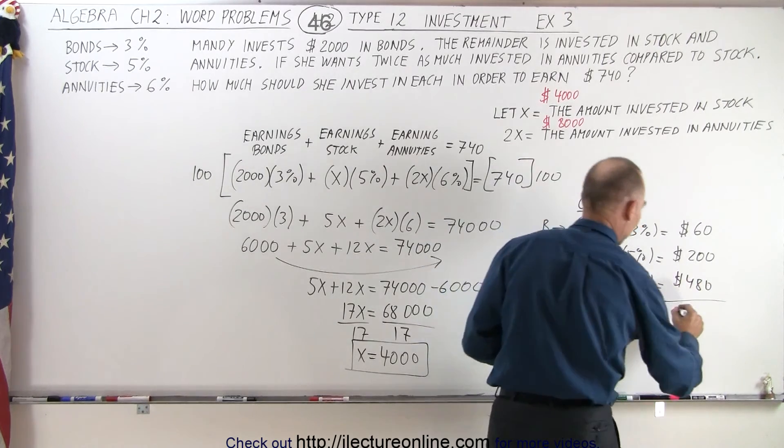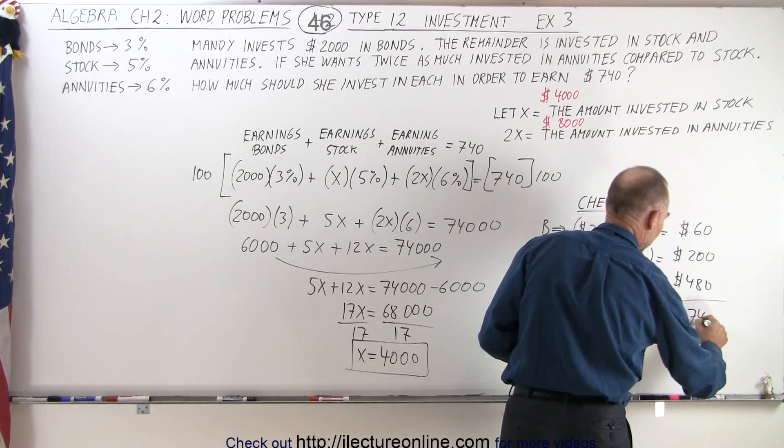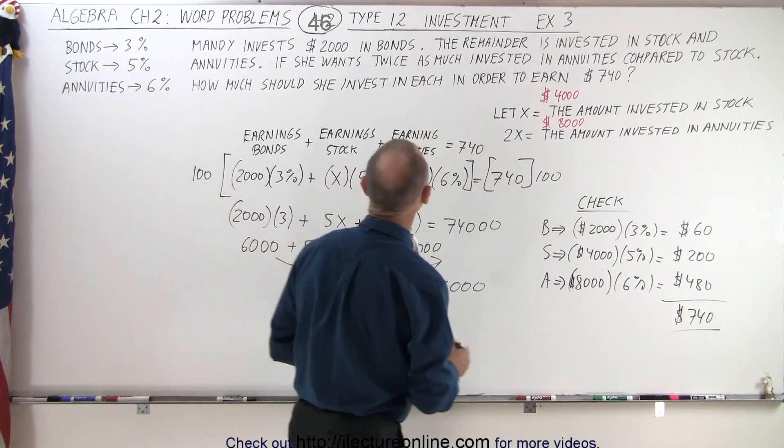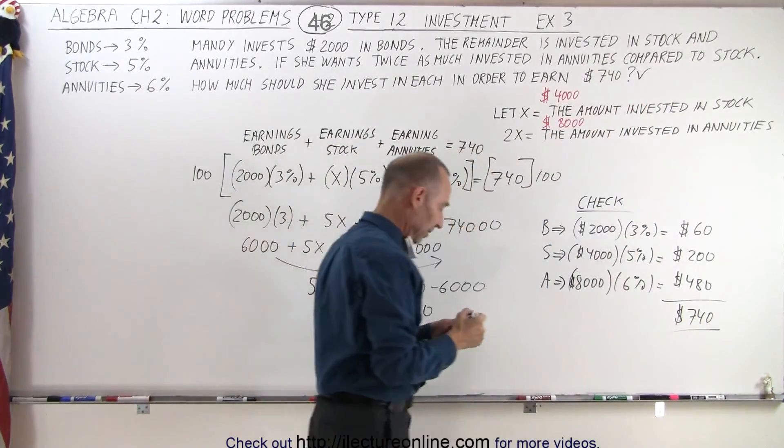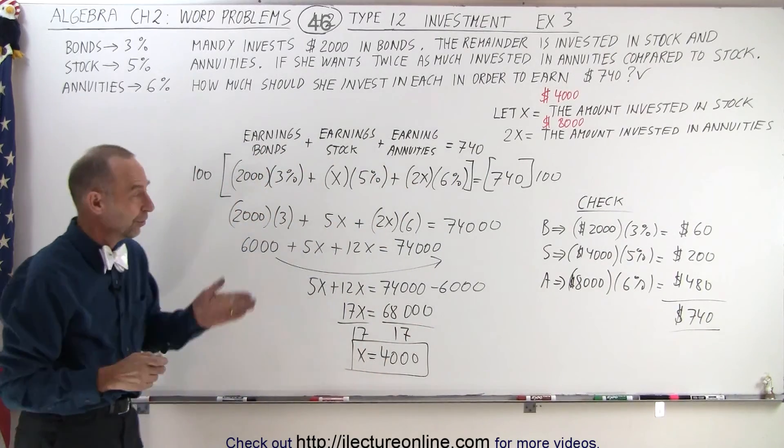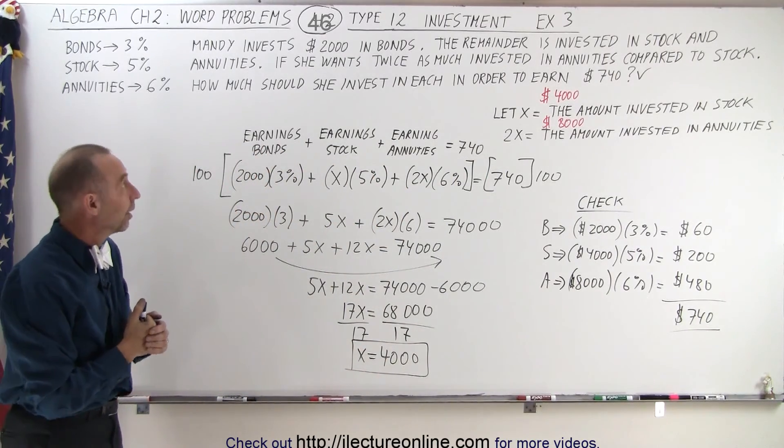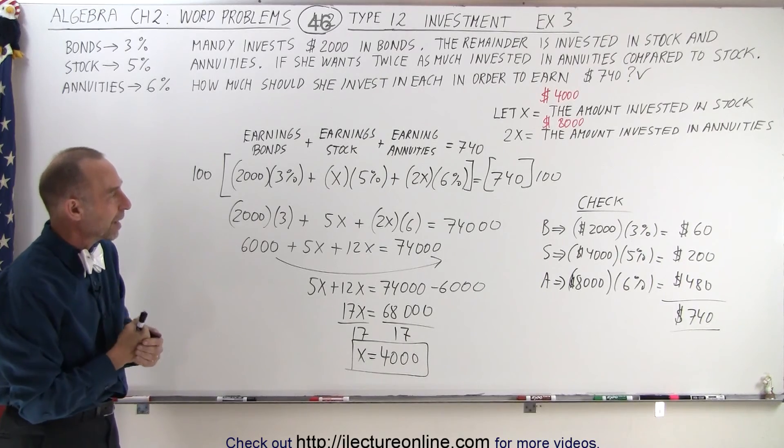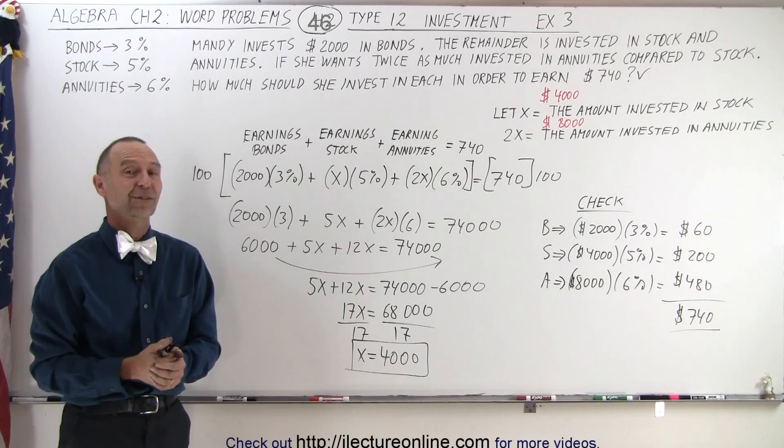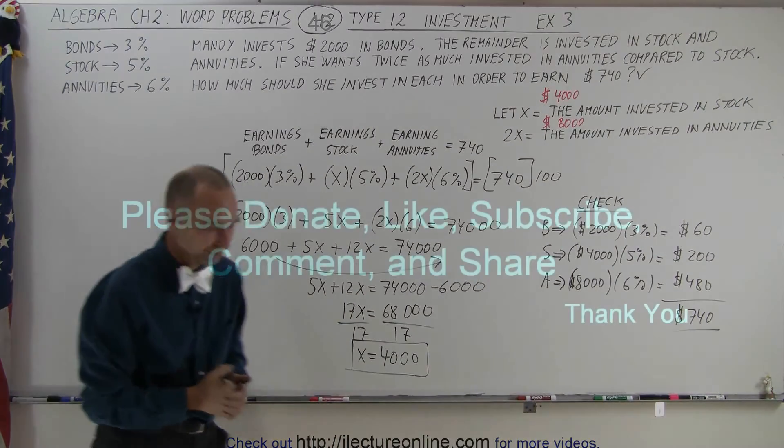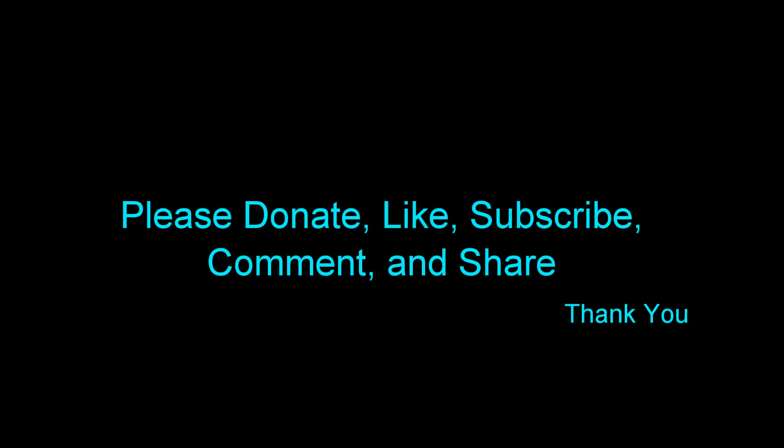When we add it all up, that gives us $740, and that was indeed the amount that she wanted to earn. And so there's the portfolio of Mandy: $2,000 in bonds, $4,000 in stock, and $8,000 in annuities. And that's how it's done. Thank you.